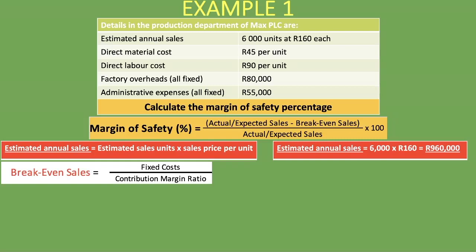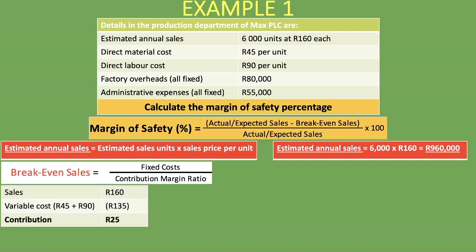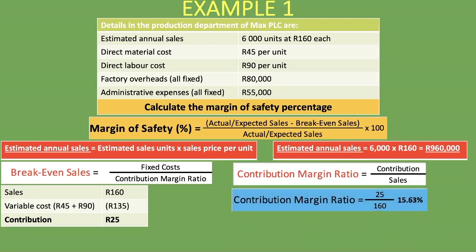To find contribution per unit, we take our selling price of 160 rand and deduct variable costs. Variable costs are direct material of 45 rand plus direct labor of 90 rand, giving 135 rand. So contribution per unit is 160 minus 135 equals 25 rand. The contribution margin ratio is then 25 divided by 160, which gives us 15.63%.